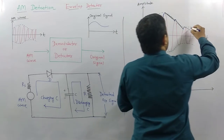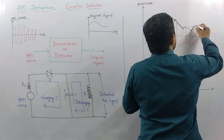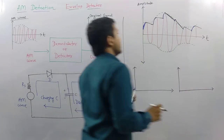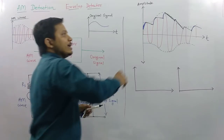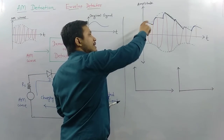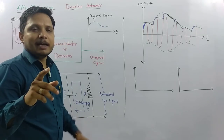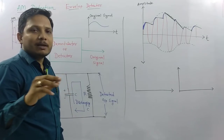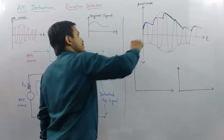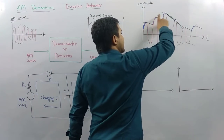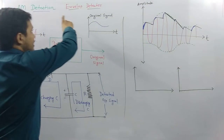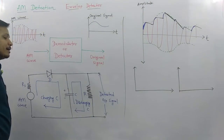So ultimately, when the voltage is positively increasing the capacitor gets charged, and when the voltage is falling the capacitor gets discharged. That charge and discharge action creates this envelope, and that is why it is called an envelope detector.